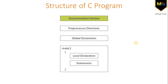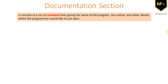Let's start with the documentation section. It consists of a set of comment lines giving the name of the program, the author, and other details which the programmer would like to use later. All these things written here consist of English-like sentences, like 'program name is writing our first C program' and 'author name is Varun Bhattra.' This is a problem because if we send this as it is, it would not be understandable by the compiler and leads to error generation.